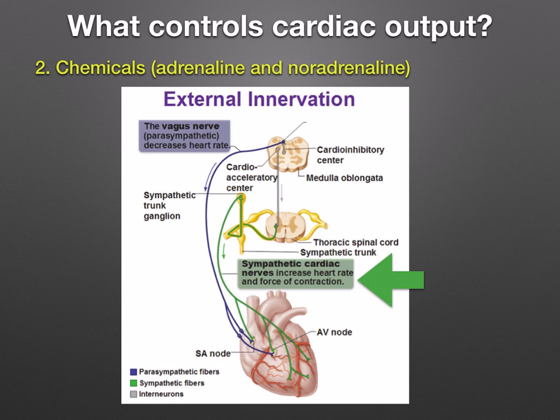Adrenaline and noradrenaline, which are chemicals, work together with the sympathetic nervous system to speed up the heart rate.